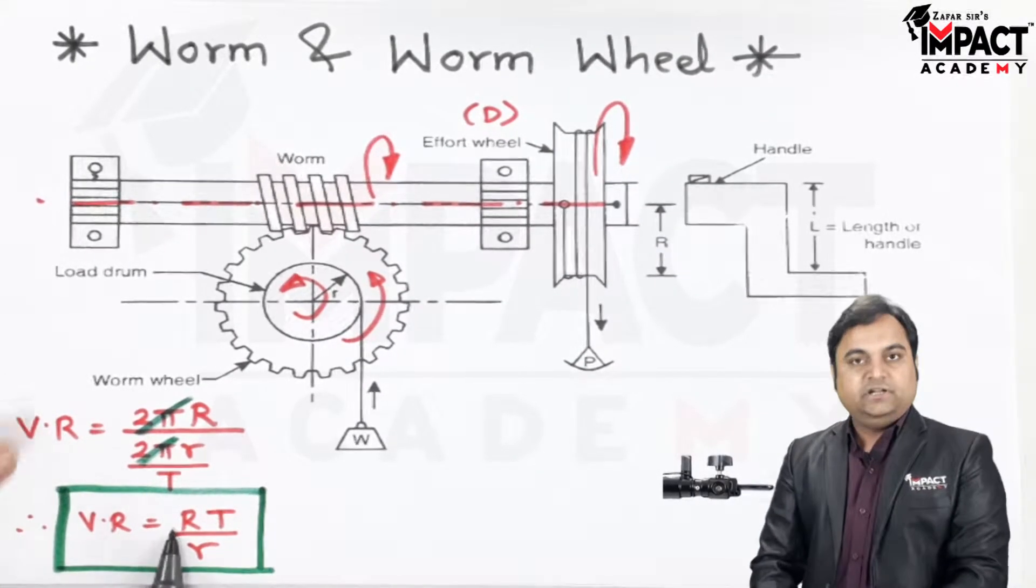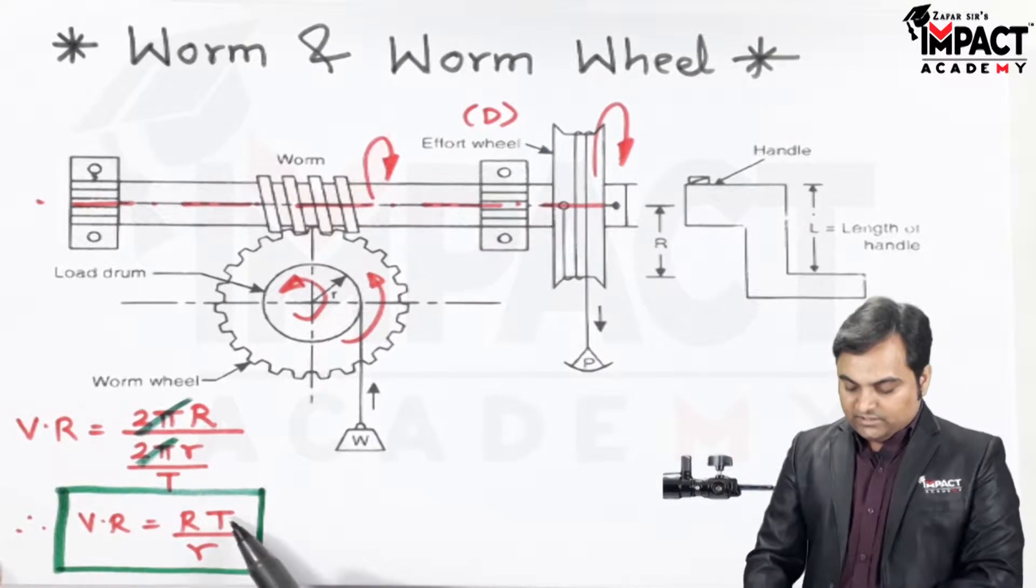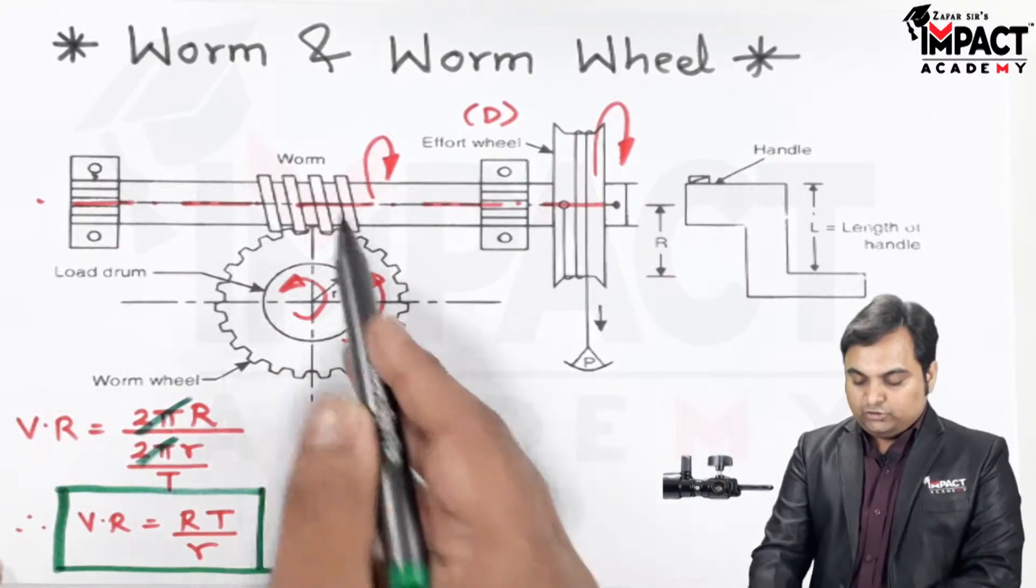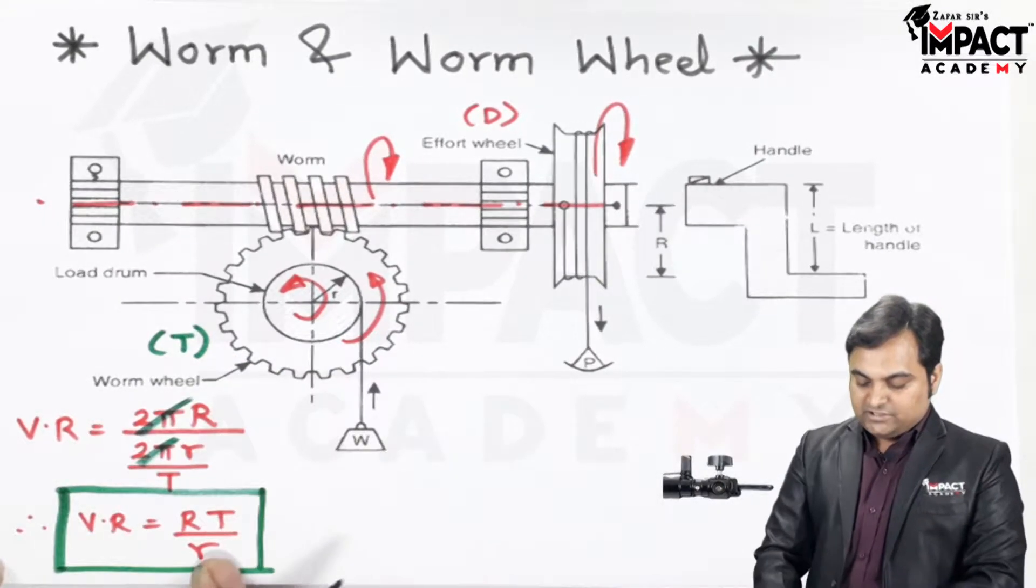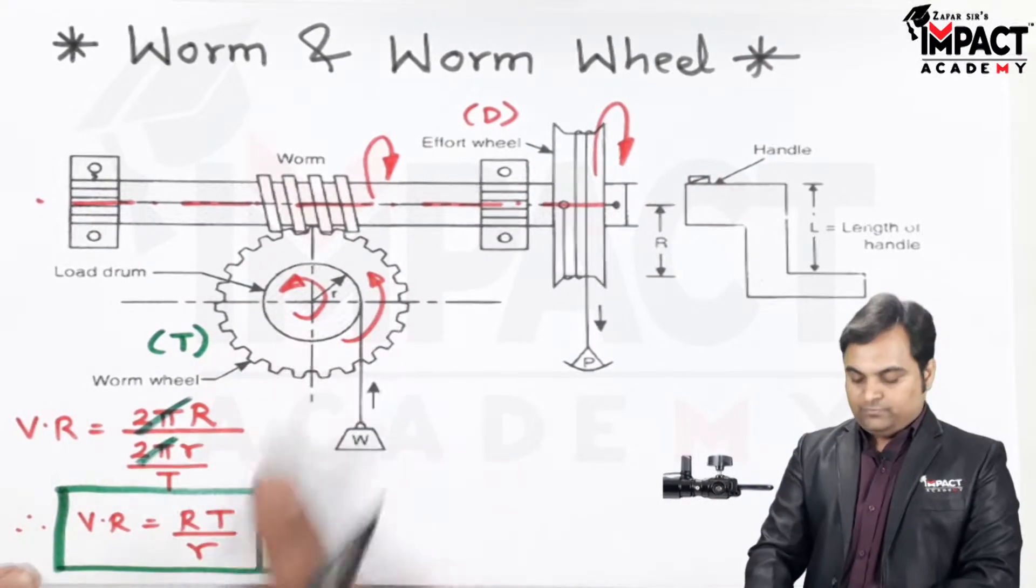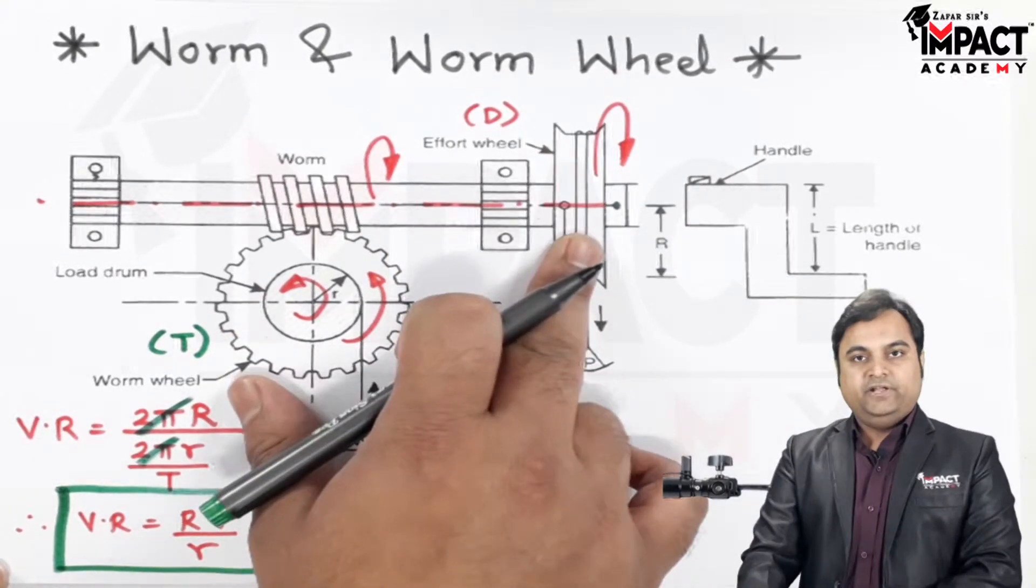Where capital R is the radius of the effort wheel, capital T is the number of teeth on the worm wheel (not on the worm, but the number of teeth on the worm wheel), and small r is the radius of the load drum. So this is the velocity ratio formula we have to use if we have an effort wheel.